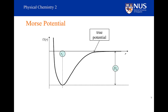We can now identify a new property of the potential, which is the dissociation energy. Notice that there is a subscript E indicating equilibrium, so this is the dissociation energy from the equilibrium position. There is something rather strange about this particular dissociation energy: we can never directly measure it, because molecules are never at the bottom of the potential energy well. The lowest energy they can possibly have is in the V equals zero level, which is slightly above the bottom of the well.